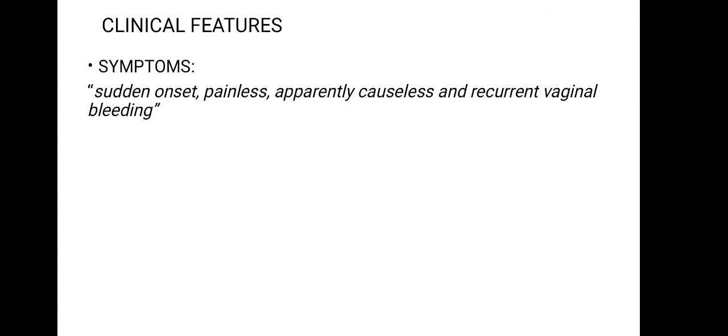Moving on to clinical features, which include symptoms and signs. Commonly the mother complains of vaginal bleeding that is sudden in onset, completely painless, and causeless. The bleeding is unrelated to any activity and often occurs during sleep — the mother wakes up to find herself in a pool of blood. It is associated with no pain unless labor starts. In contrast, abruptio placenta presents with painful vaginal bleeding, whereas placenta previa is painless, sudden in onset, causeless, and recurrent.